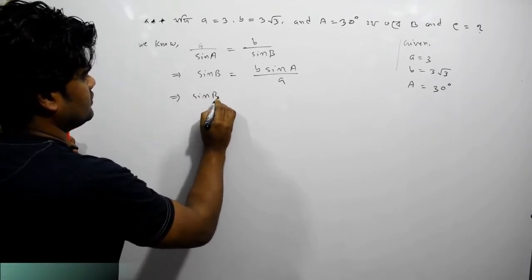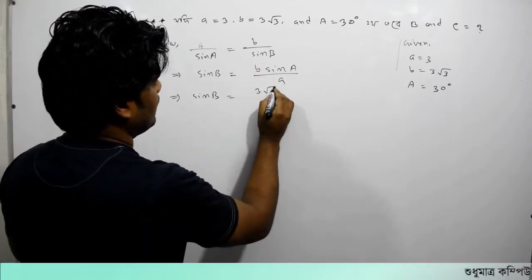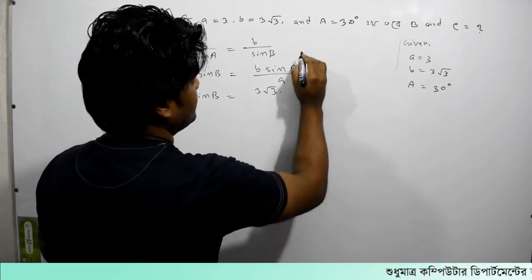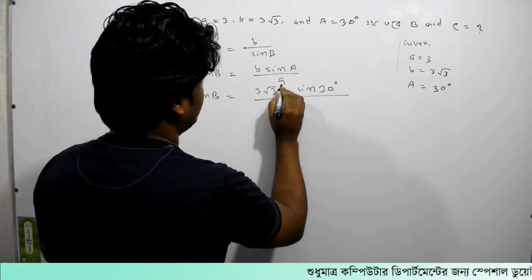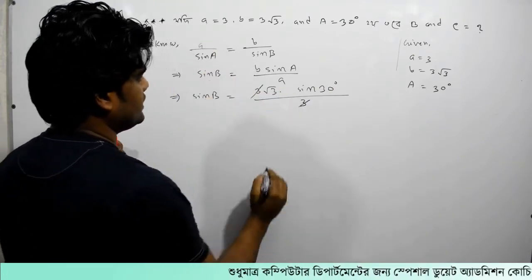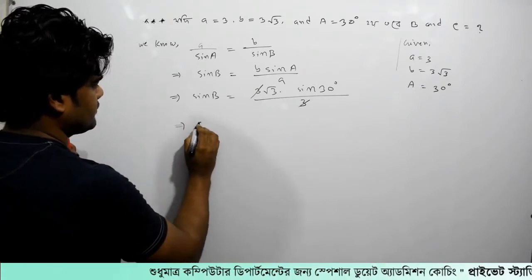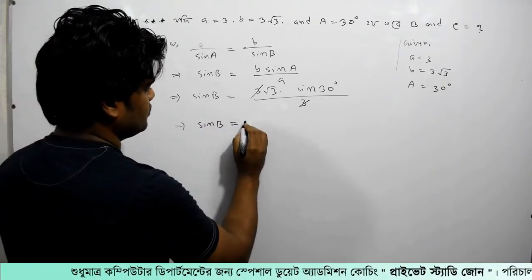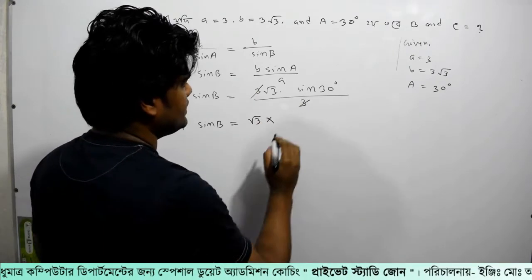sin B equals b into sin A divided by a. So sin B equals root over 3 into sin 30 degrees, divided by a. This gives us the value of sin B equal to root over 3 into sin 30 degrees.